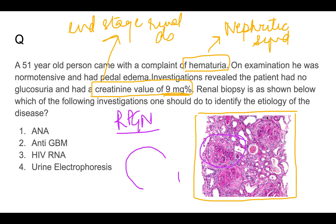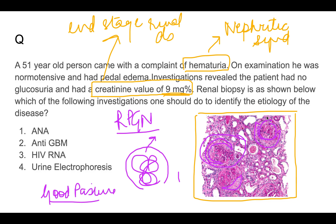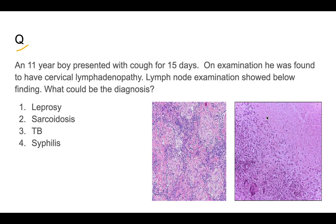In the histology, the glomeruli show the entire Bowman's space covered by mesangial proliferation in the form of crescents — the classic crescent formation of RPGN. One important cause of RPGN is Goodpasture syndrome, caused by anti-GBM antibodies. HIV RNA, urine electrophoresis, and ANA are not relevant here. The answer is anti-GBM antibodies.